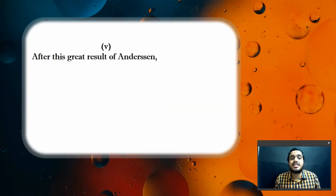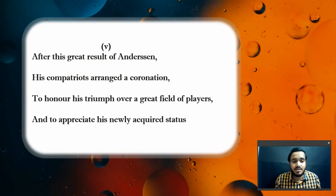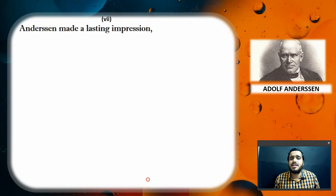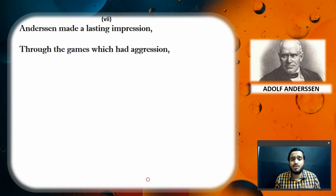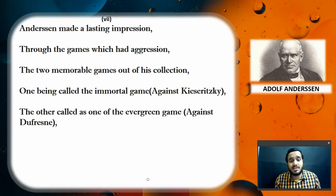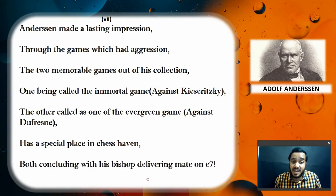After this great result of Andersson, his compatriots arranged a coronation to honor his triumph over a great field of players and to appreciate his newly acquired status. Andersson made a lasting impression through games which had aggression. The two memorable games from his collection — one called the Immortal Game, the other called the Evergreen Game — have a special place in chess heaven, both concluding with the bishop delivering mate on e7.